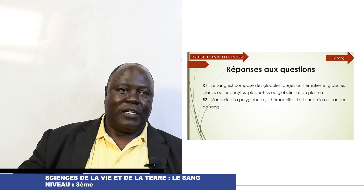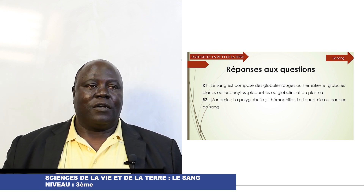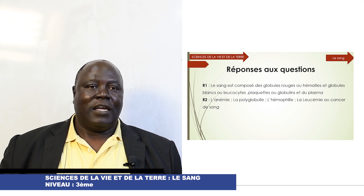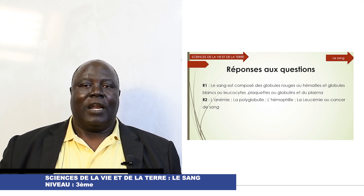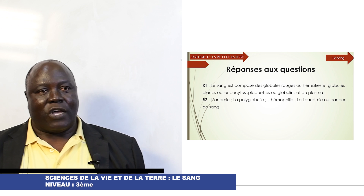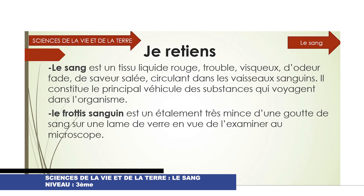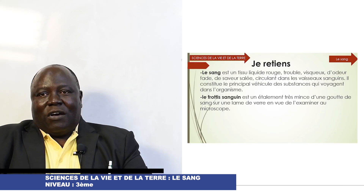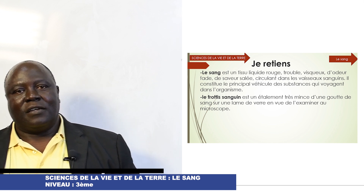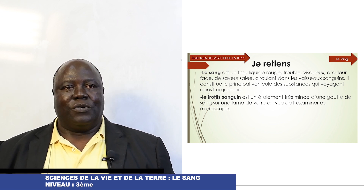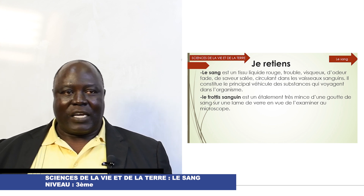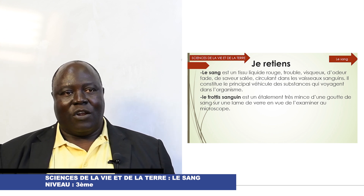Parmi les maladies qui affectent le sang, nous avons l'anémie, la polyglobulie, l'hémophilie, la leucémie ou cancer du sang. Le sang est un liquide rouge, trouble, visqueux, d'odeur fade, de saveur salée, circulant dans les vaisseaux sanguins. Il constitue le principal véhicule des substances qui voyagent dans l'organisme.